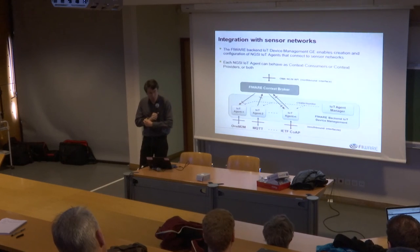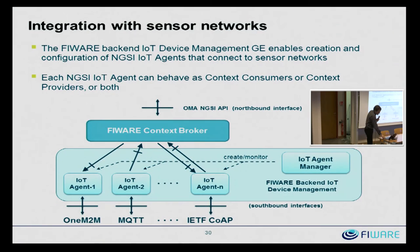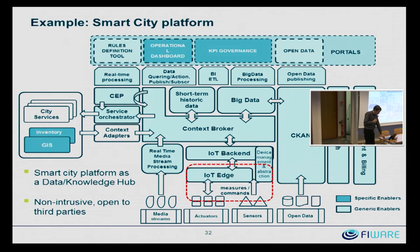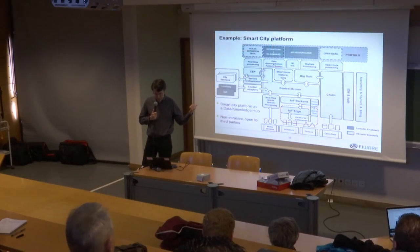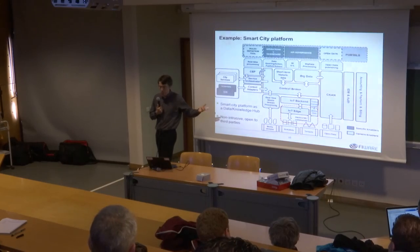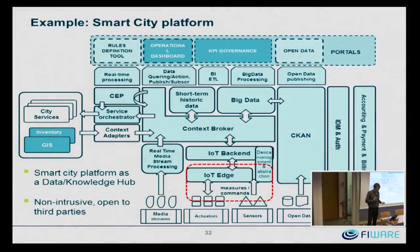Different kinds of sensor networks can potentially be used below the FIWARE platform. Traditional network protocols are integrated through components called IoT agents, which individually interface with each IoT protocol. Operating close to the sources of data corresponds to what we call IoT edge components, managed separately from the backend part of the platform.